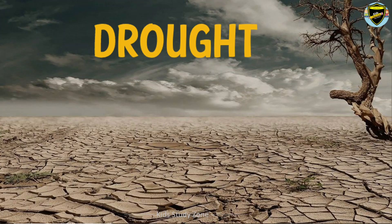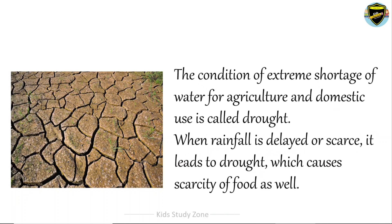Next is drought. The condition of extreme shortage of water for agriculture and domestic use is called drought. When rainfall is delayed or scarce, it leads to drought, which causes scarcity of food as well.